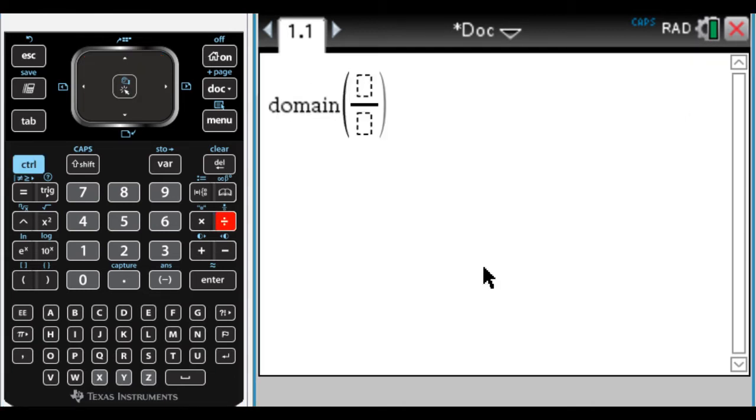So domain, let's do something that we can easily confirm. Say my function is 1 over x minus 1. In that function, the variable is x, so I'm telling the calculator that, and then I'm going to press Enter.